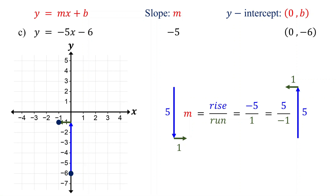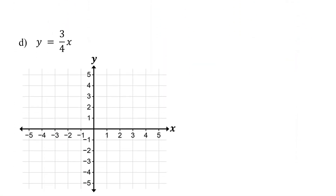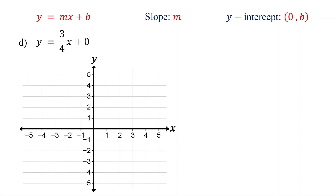Now pause the video and plot one more point. From the second point, move up 5 units, then to the left 1 unit and plot a point. Finally, draw a line that passes through the points. Now, what if there is no constant term? What does that mean for the y-intercept? No constant term means b equals 0. So the slope is 3/4, and the y-intercept is (0, 0). Next, plot the y-intercept, which is the origin.